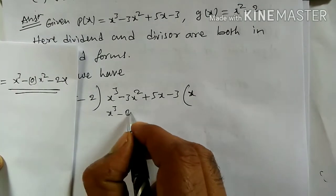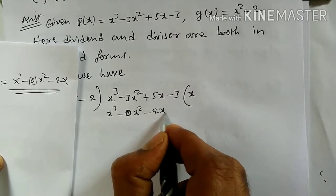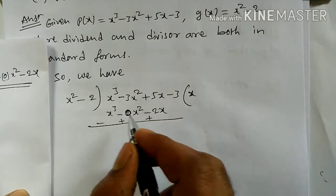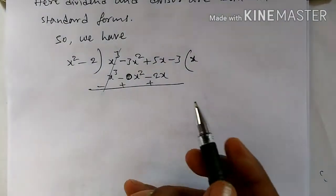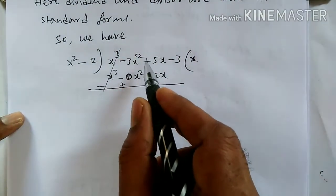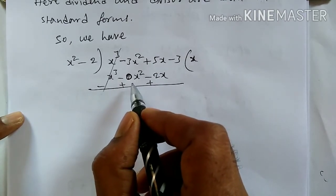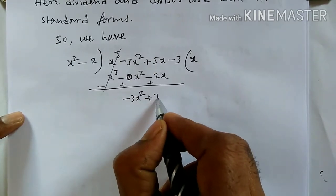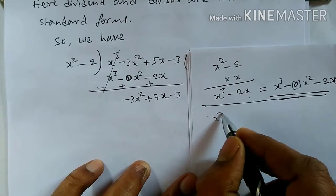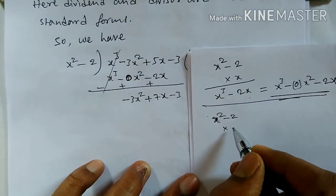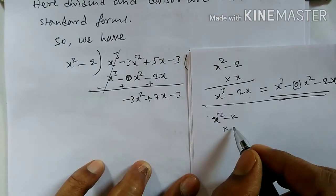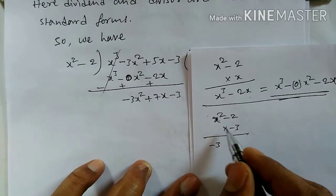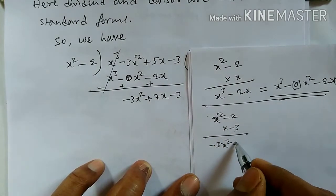We write the standard form as X cube plus 0 into X square minus 2X. Subtracting, we get minus 3X square plus 5X plus 2X, which is plus 7X, and the remaining constant term is minus 3. Now, for the next step, we divide again using X square minus 2. Multiplying by minus 3, we get minus 3 into X square minus 2, giving minus 3X square plus 6. Written in standard form: minus 3X square plus 0 into X plus 6.